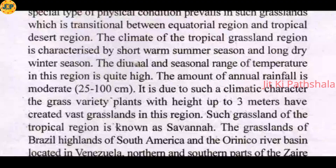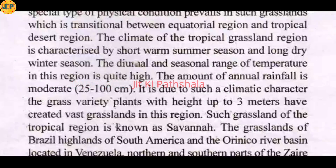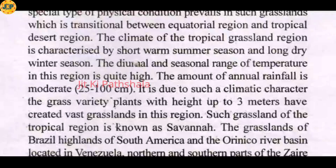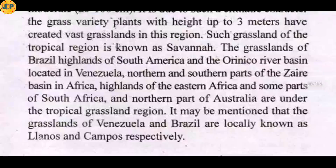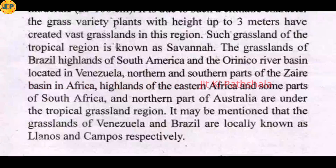Due to this climatic difference and the height of the grass, a vast area is covered by grass. Such grassland of the tropical region is known as Savana, or tropical grassland. The grassland found in the tropical region is called Savana.